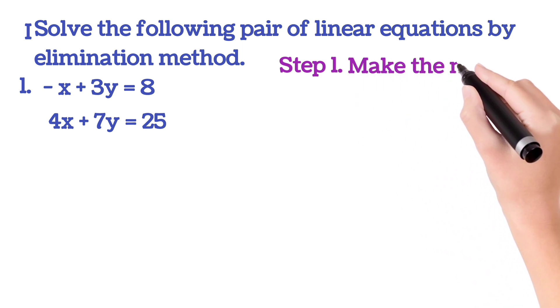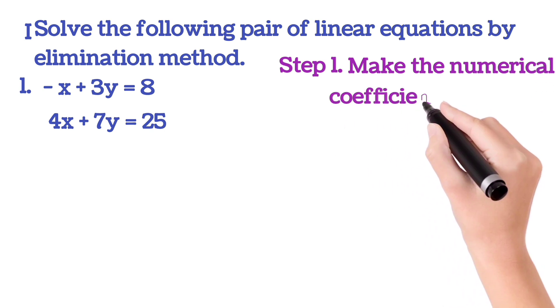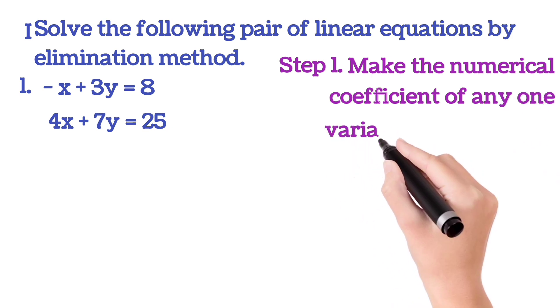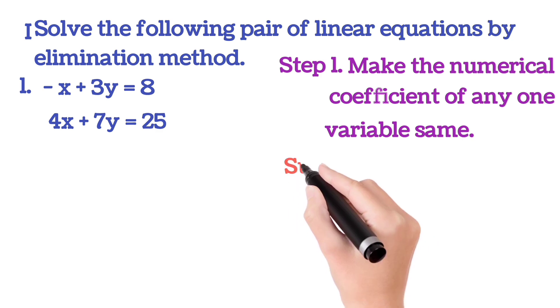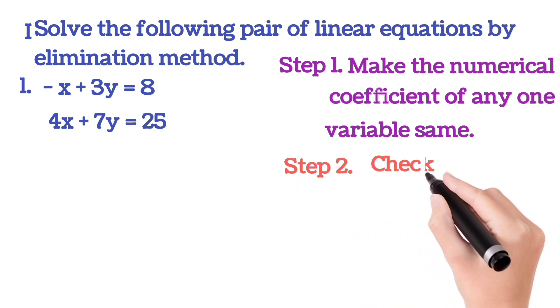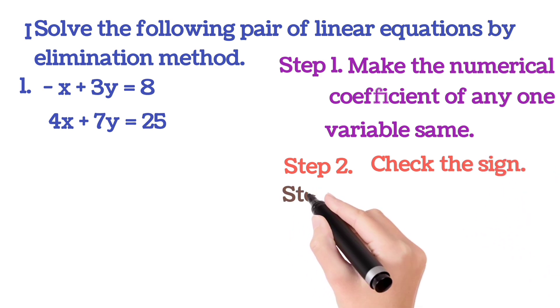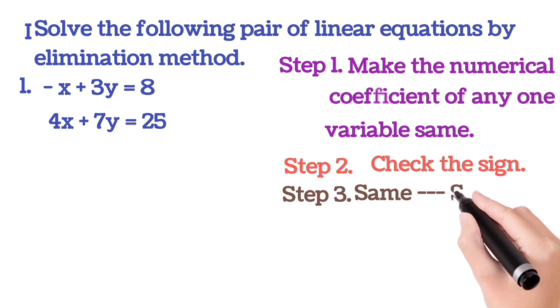Just see. Step one is you will make the numerical coefficient of any one variable same. Now after doing that, you will do step two, that is you will check the sign. If it is same, then you will do subtraction.